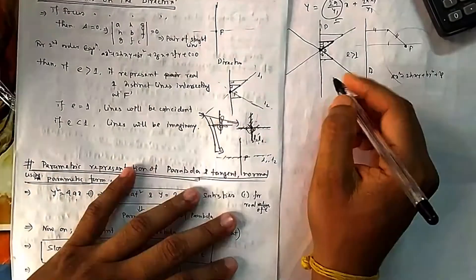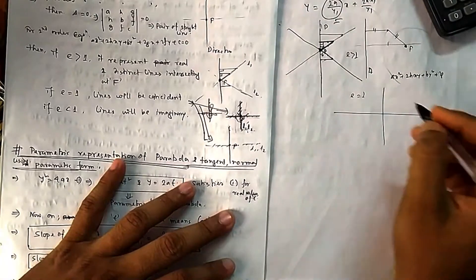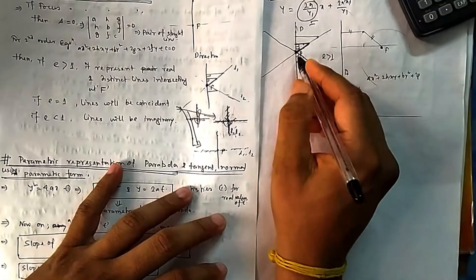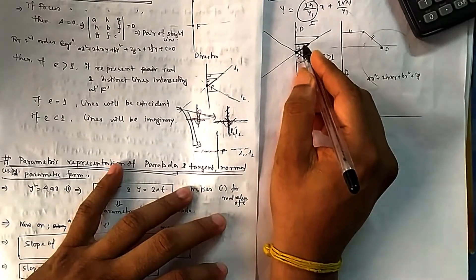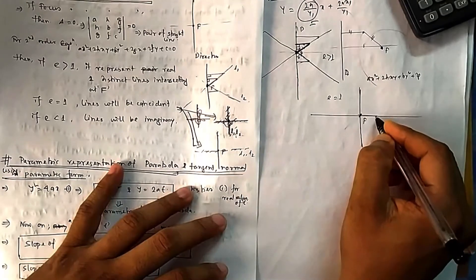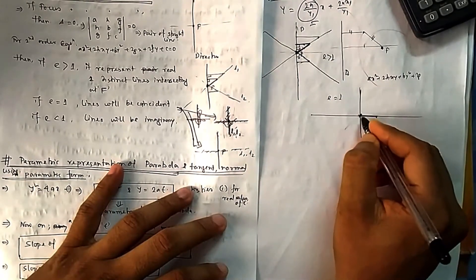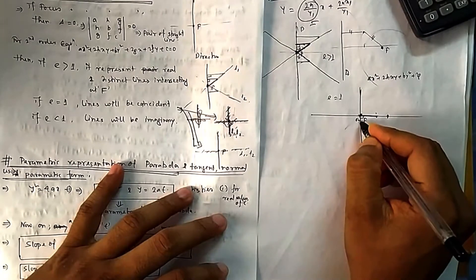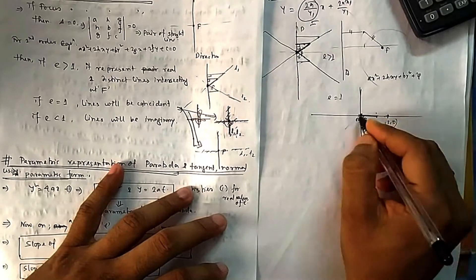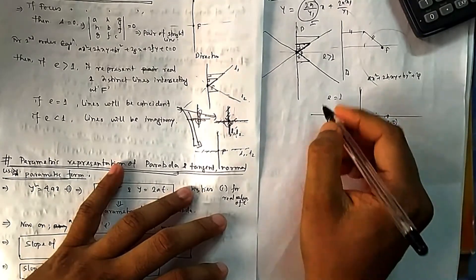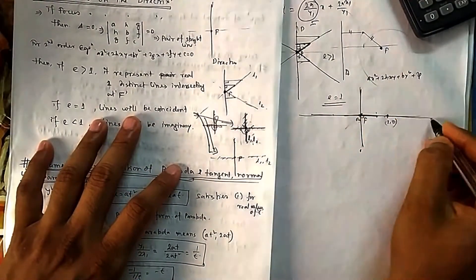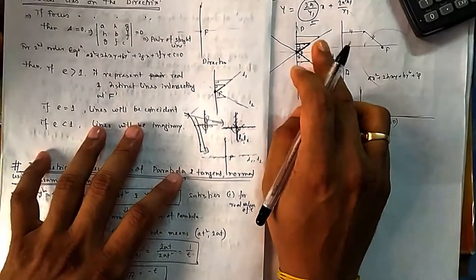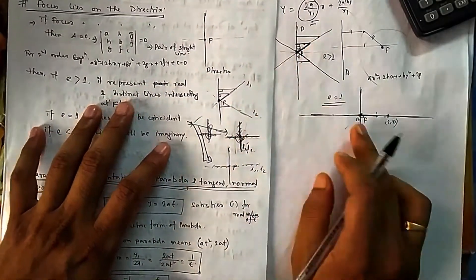Now if e = 1, you need to find points where the distance from the focus equals the distance from the directrix. If the line is inclined they will never be equal; it is only equal when you come to this specific line. For example, if the focus is at (0, 0) and the directrix passes through (2, 0), then on the directrix line both distances equal 2 units. So these two lines become coincident — the same line repeating. When e > 1 you get two real distinct lines, but when e = 1 you get coincident lines.